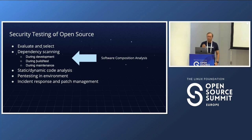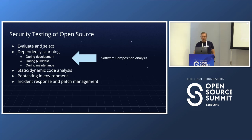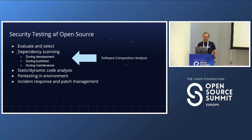Moving to open source security testing — the lifecycle starts with evaluating and selecting a component, then dependency scanning using an SCA tool during development, building, and testing. You also do static and dynamic code analysis — sometimes for open source taken in, depending on your organization. Then pen testing in an environment, and finally incident response and patch management.